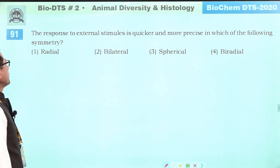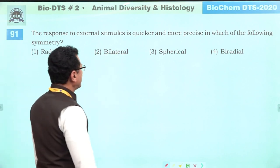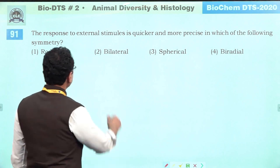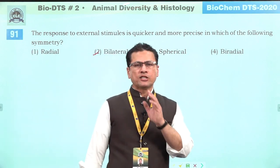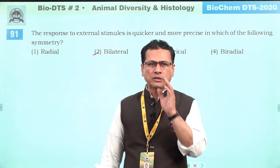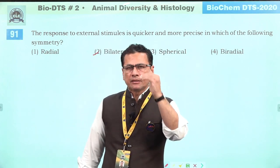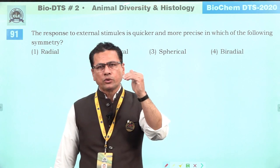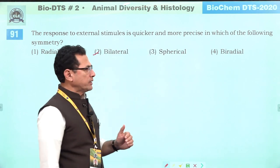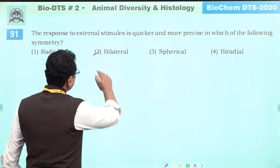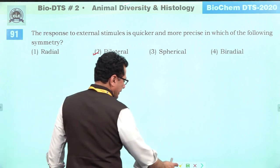The response to external stimuli is quickest and most precise in bilaterally symmetrical animals, because receptors (eyes, ears) are present on the anterior side of the body (head). That is why answer is two: bilaterally symmetrical animals.